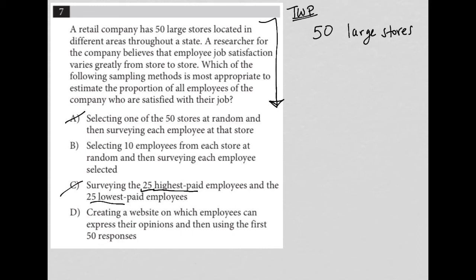Choice D: creating a website on which employees can express their opinions and then using the first 50 responses. I dislike this method completely because usually the people who are going to actually express their opinions are the people who are not happy — especially the first 50 responses. And to say you're only getting 50 responses out of 50 large stores is also a very small sample size.